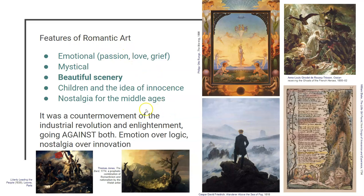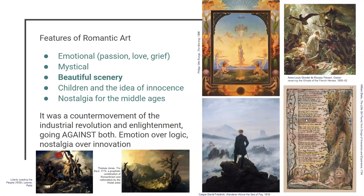Romanticism was going against both the Industrial Revolution and the Enlightenment. Rather than putting logic above all else, romanticism is all about emotion — whether it's passion, love, or grief. And rather than moving forward with new ideas, romanticism is all about nostalgia and looking back at the good old days. You can see in these paintings — and this one over here is also a poem — a wide variety in how romantic pieces looked, but they share an emotional quality, and a lot of it is very mystical with beautiful scenery.